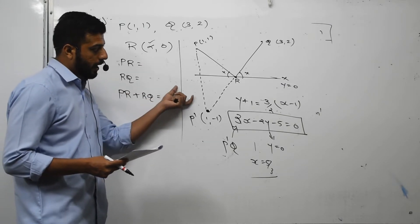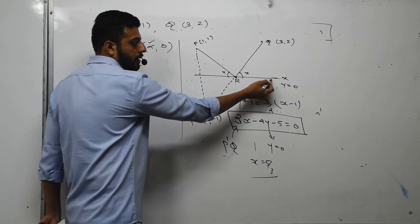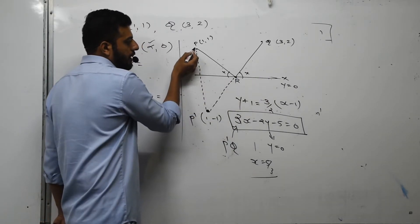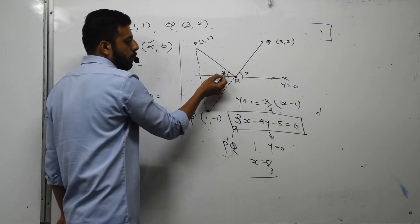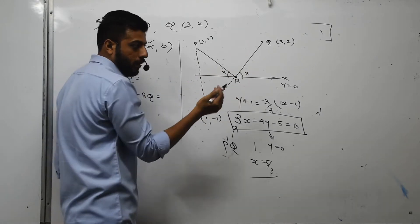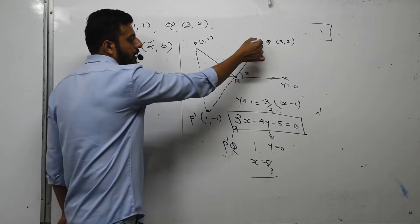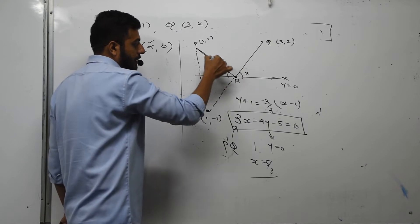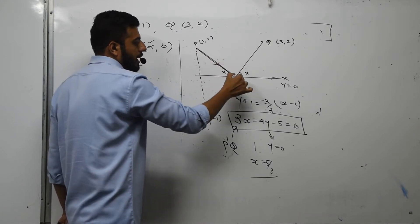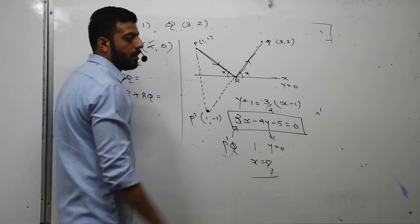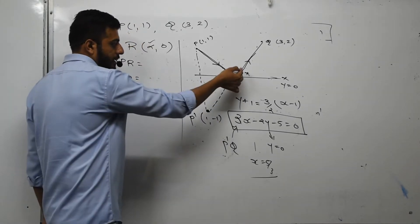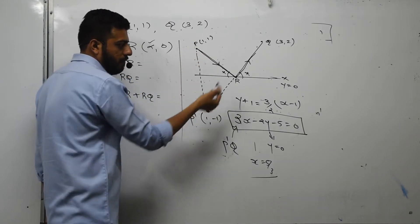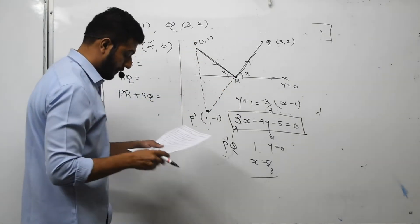This is the equation of line P prime Q. Solving with y equals 0 gives x equals 5/3. This is the short method — more effective than calculus. QR acts as the reflected ray and PR as the incident ray, with both angles equal. The image of P with respect to the X-axis is P prime, and the point R is found at x equals 5/3.